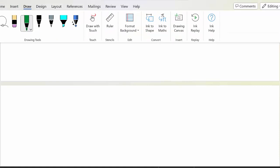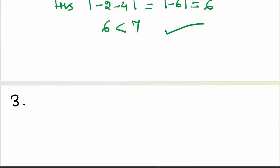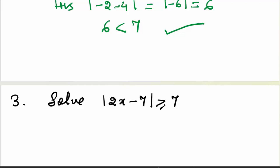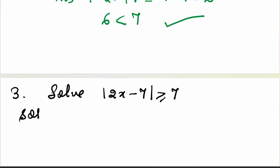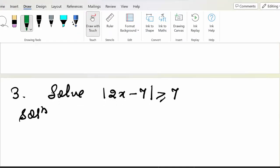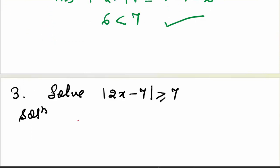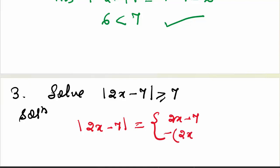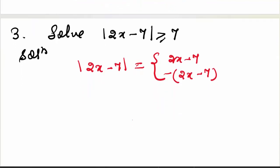Now come to the third question. In question number 3, we are asked to solve the inequality mod of 2x minus 7 is greater than or equal to 7. Again, we will take two cases. The first case will be mod of 2x minus 7 is 2x minus 7, and the second case will be minus of 2x minus 7.